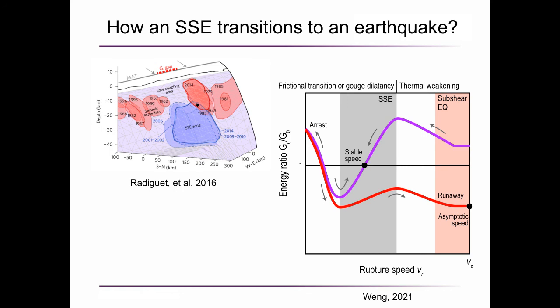Once this slow slip event propagates into a high seismic coupling segment, where the accumulated shear stress is high and the thermal weakening mechanism dominates the strengthening mechanism, then the steady state slow slip event could transition to a non-steady earthquake and accelerate to shear wave speed.